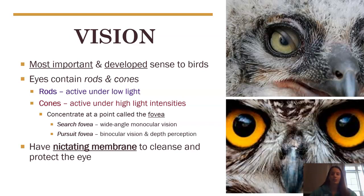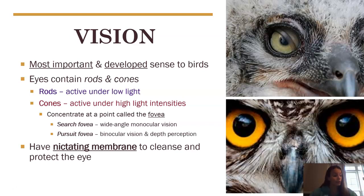Vision is the most important sense to birds, and also the most well-developed. Their eyes contain rods and cones — rods are better for low light situations while cones are for high light. They also have search fovea and pursuit fovea, which helps them see both binocular and wide-angle monocular vision, and they have really good depth perception. This is especially important for hawks that are trying to swoop down and attack their prey. They also have a nictitating membrane which helps clean and protect their eye.